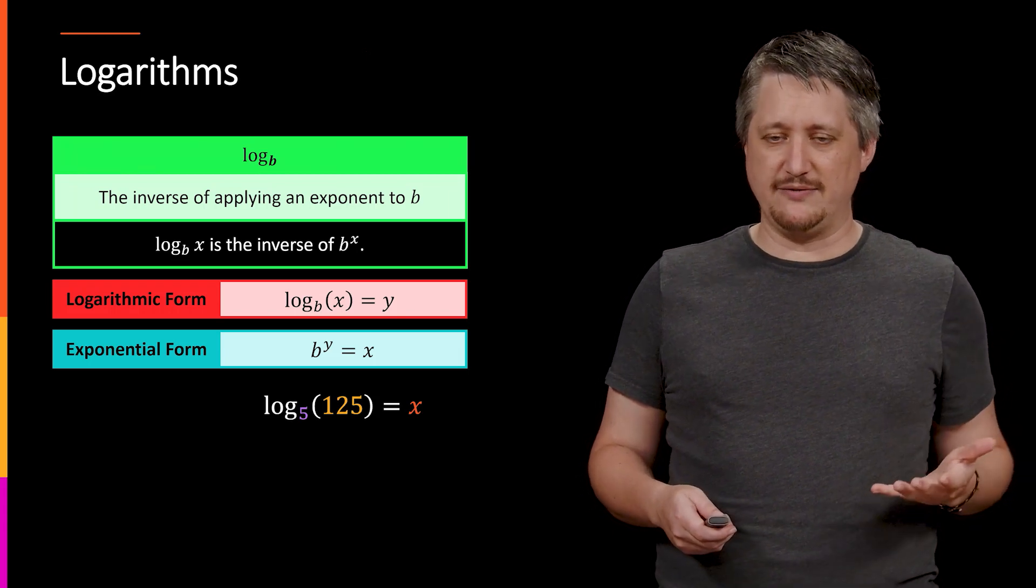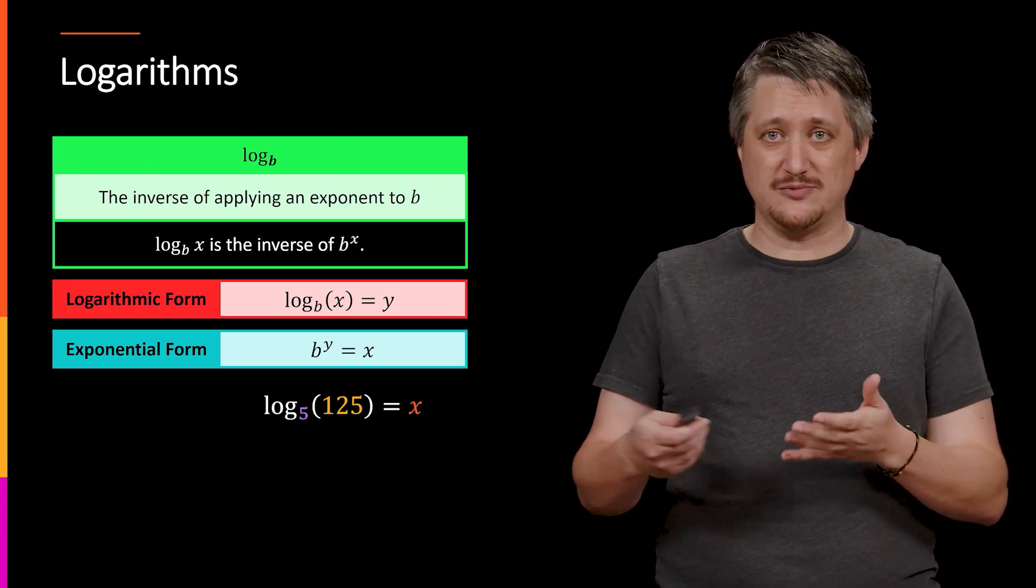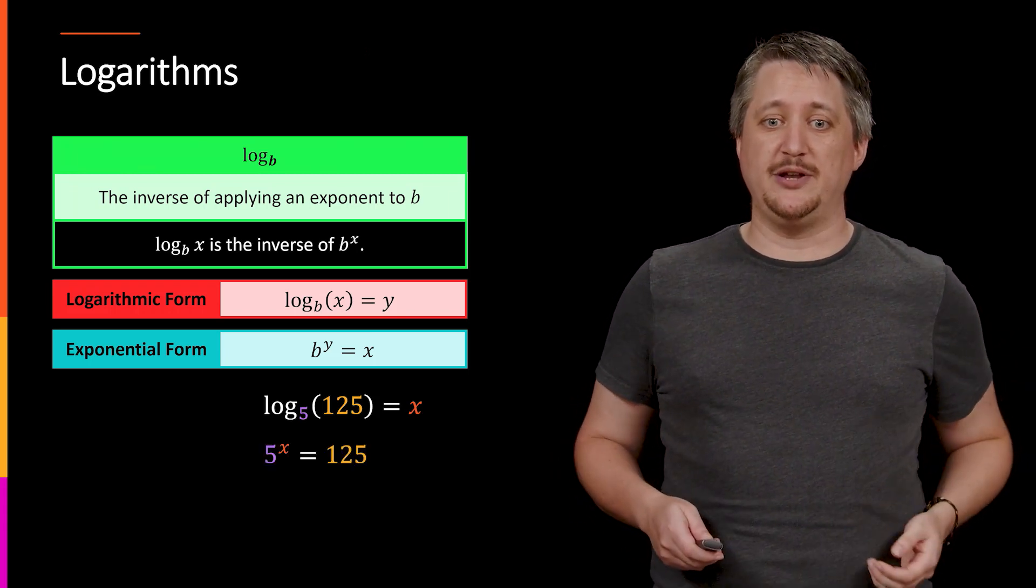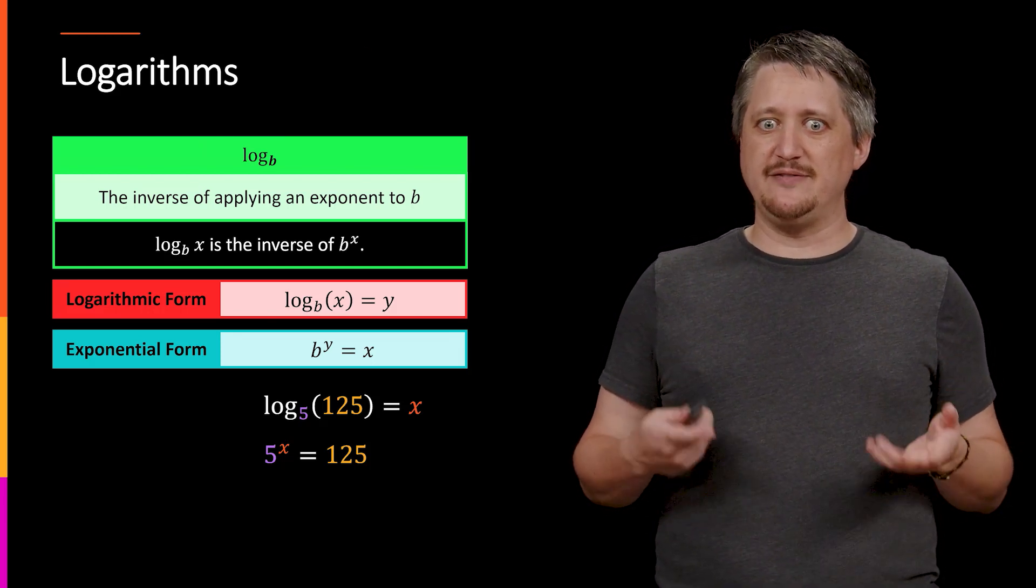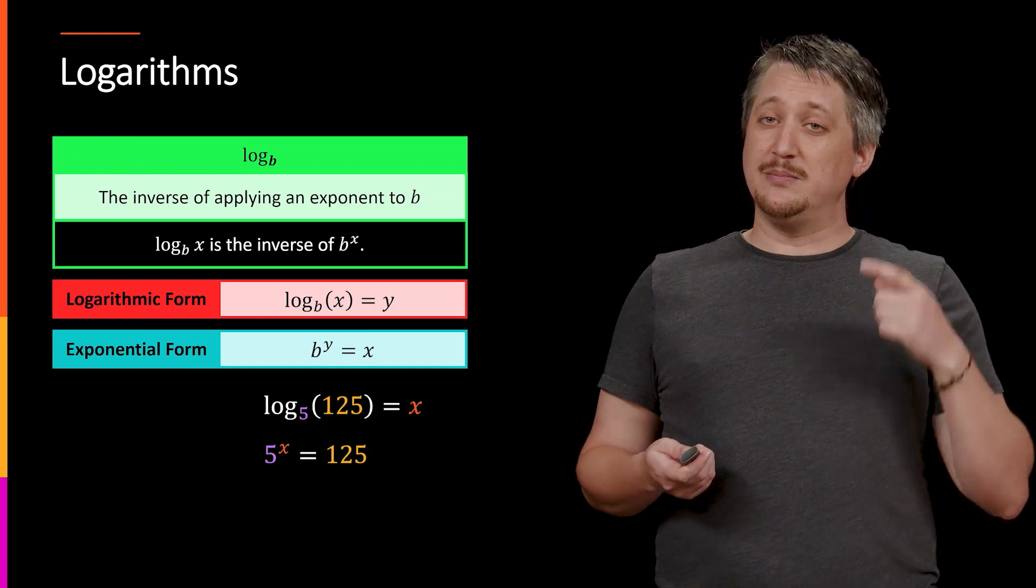So what I can do is label it as a value, like x, right? So I'm like, alright, log base 5 of 125, I'll call that x, so equals x, and then I'll put it in exponential form. So then I'm like, okay, that would be equivalent to saying 5 to some power is 125.